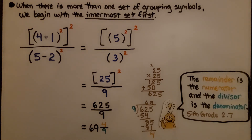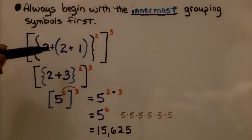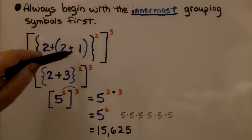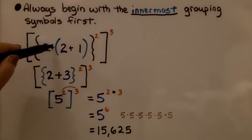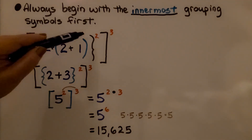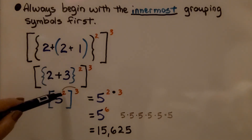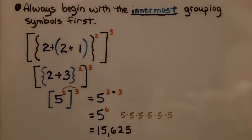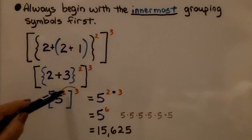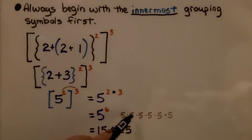Always remember, begin with the innermost grouping symbols first. Here we have brackets, braces, and parentheses as grouping symbols. We start in the very center first with the 2 plus 1 — that's a 3. Now we add 2 to this: 2 plus 3 is 5. We slowly worked our way outward. Inside the braces, 5 is raised to the second power, then raised to the third power. We use the power rule to multiply 2 times 3, giving us 5 raised to the sixth power — 5 as a factor 6 times — which equals 15,625.